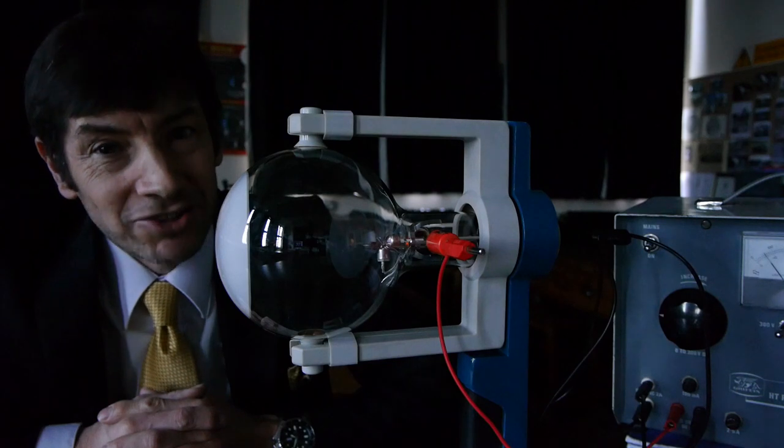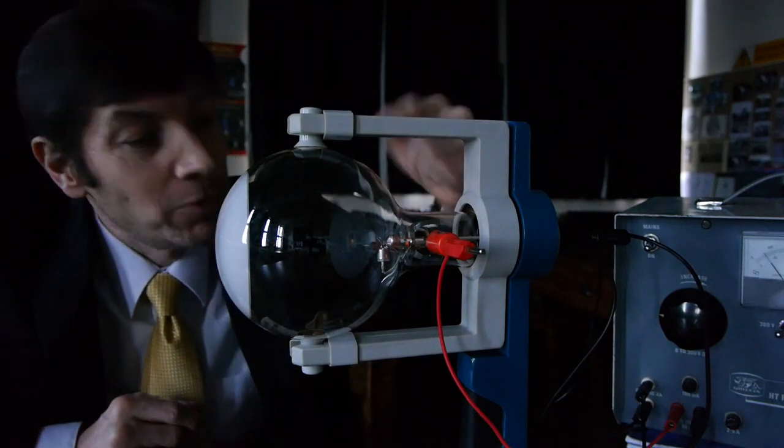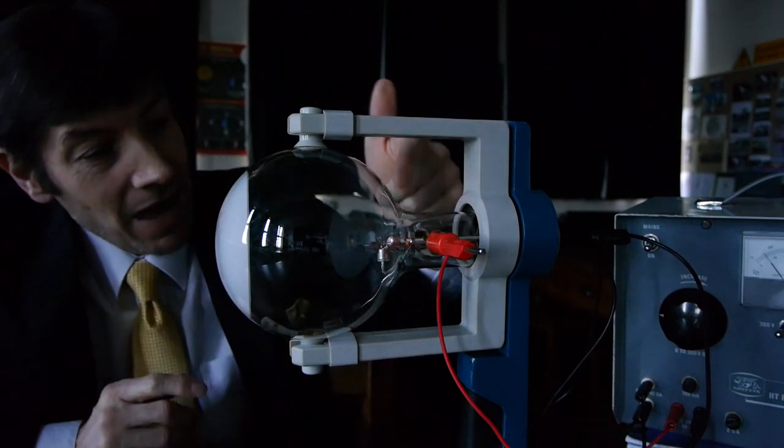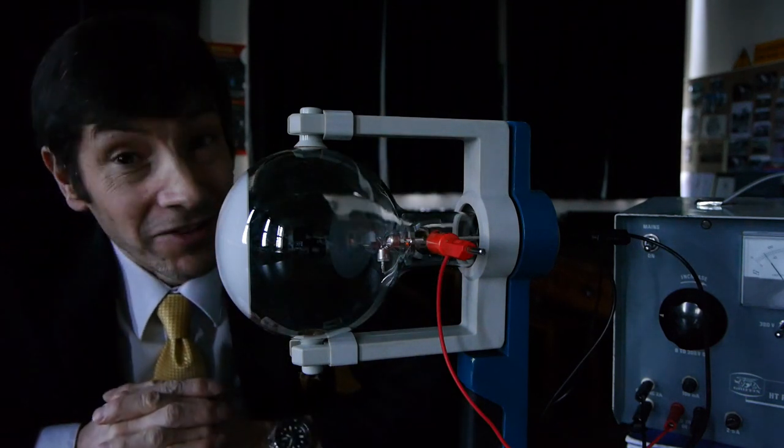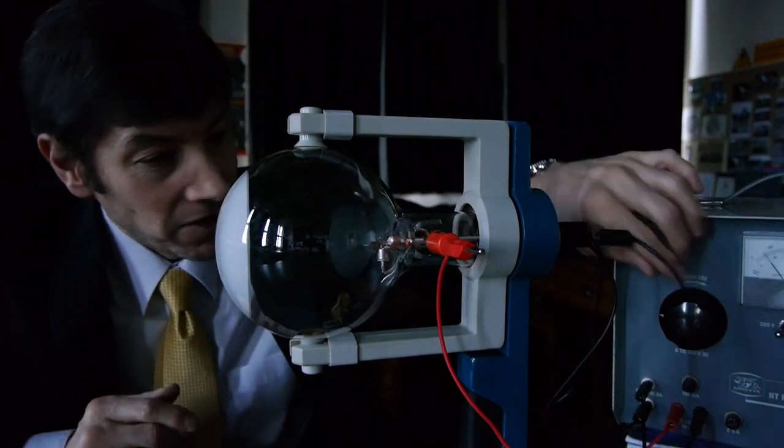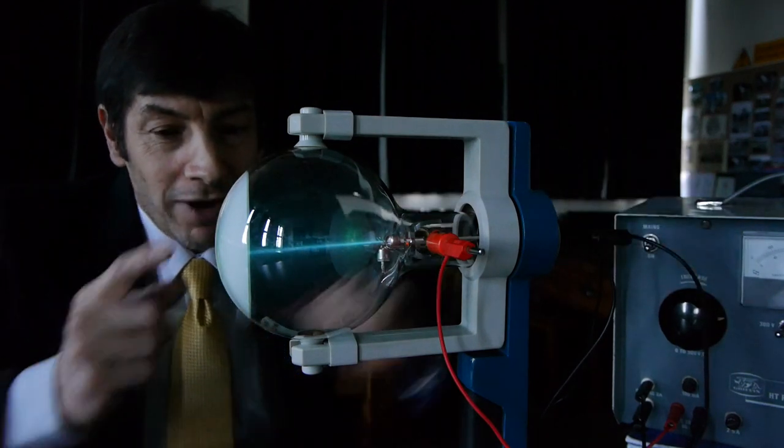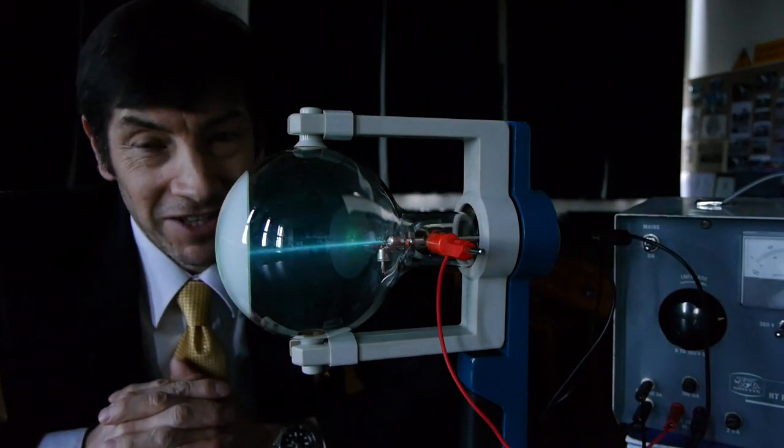So there you go. That's the electron gun. In other words, a hot filament in this part of the tube with electrons boiling off it. A very positive anode in front that accelerates the electrons, making it the gun and the high speed electrons traveling across the tube and crashing into the colored phosphor at this end.